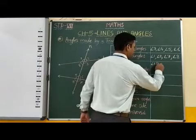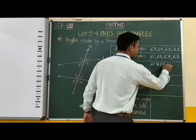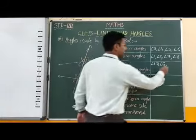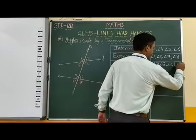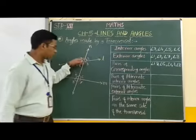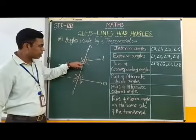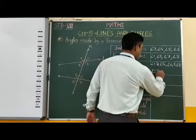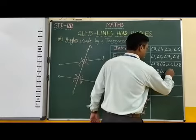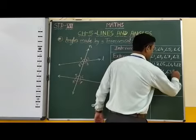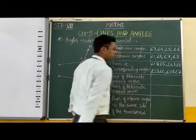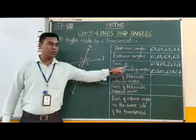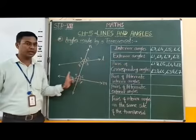Therefore we write: angle 1 and angle 5, angle 4 and angle 8, angle 2 and angle 6, angle 3 and angle 7. In this figure there are 4 pairs of corresponding angles.